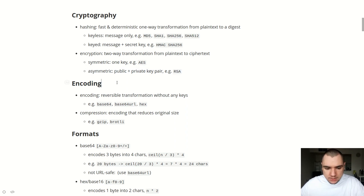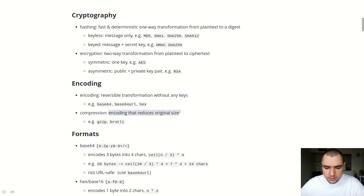One concept that sometimes gets mixed up with cryptography is encoding. Encoding is essentially a reversible transformation without using any secret keys. Some examples would be base64, base64 URL, and hex. These are all reversible transformations — you can encode a string and easily go back to the original without any secret keys. There's also compression, which is encoding done for the purpose of reducing the original size of the input — examples include gzip and Brotli. Encoding functions are used for transport; cryptographic functions are used for security purposes.